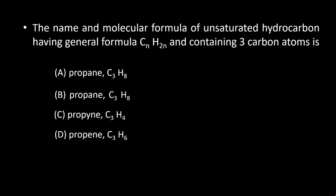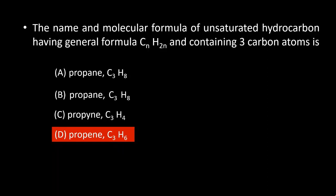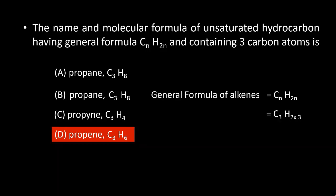Next question: the name and molecular formula of the unsaturated hydrocarbon having general formula CnH2n and containing three carbon atoms is. The right answer is option D, propene, with molecular formula C3H6. We can calculate this using CnH2n, where n equals 3. Substituting, we get C3H6.